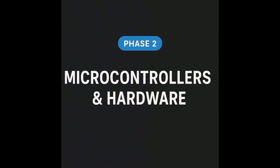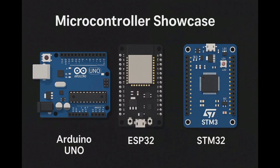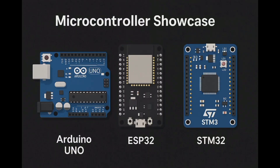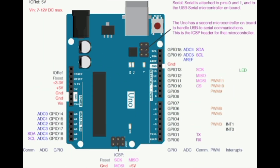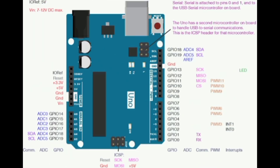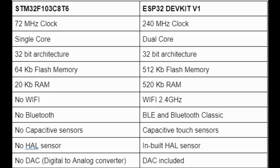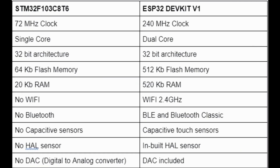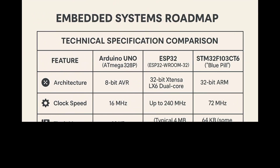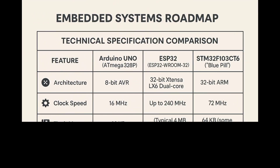Once your basis in C programming and digital electronics are solid, then you can move to programming microcontrollers. You can start simple with the Arduino Uno, then scale up to the ESP32 and STM32. Here you get to work with various architectures and see the advantage of one over the other.